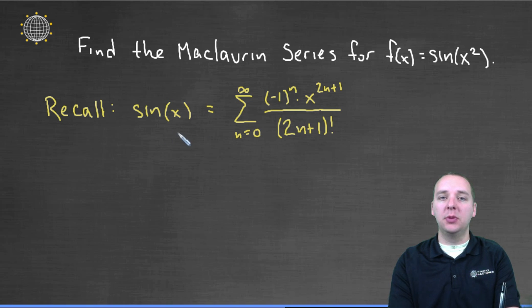And just to remind you, sin(x)'s Maclaurin series was sum from zero to infinity of (-1)^n times x^(2n+1) over (2n+1) factorial.